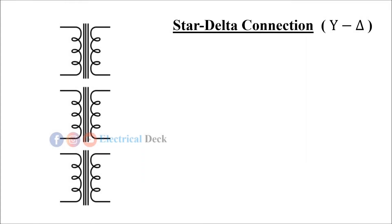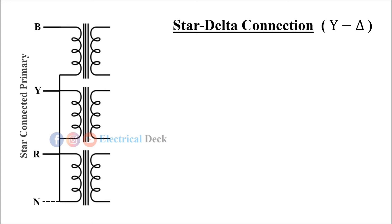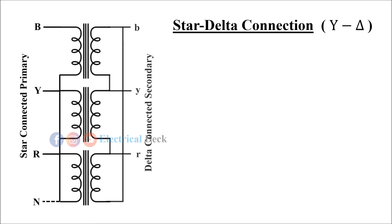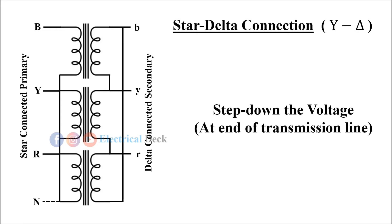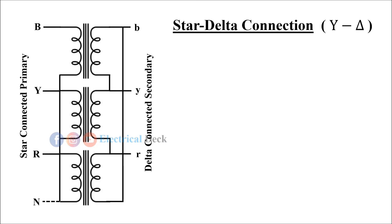In star-to-delta connection, the three-phase primary winding is connected in star while the secondary is in delta. This type of connection is commonly employed at the substation end of the transmission line. The main usage is to step down the voltage. The neutral available on the primary side is grounded, and there is a phase difference of 30 degrees between primary and secondary line voltages.